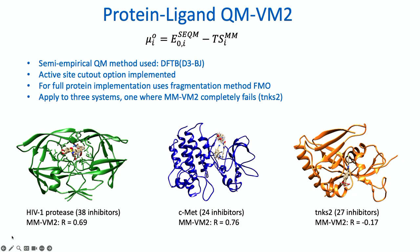I'd like to move on and describe our introduction of QM into protein-ligand VM2. It's quite amenable to including QM potentials because we can run an initial MM run, and then for those conformations generated, we can do corrections at a quantum chemistry level. At this point we're using semi-empirical QM DFTB. We back out the configurational entropy term from the MM run and add that term in. We've implemented this as an active site cutout option — the same cutout as MM — and also an implementation using a fragmentation method, calculating the FMO method in GAMESS, so we can include the whole protein in these calculations.